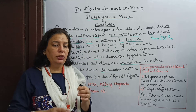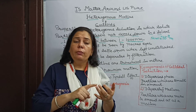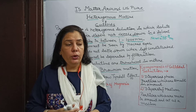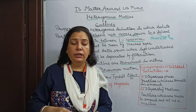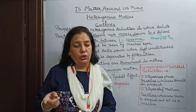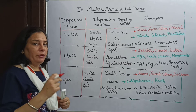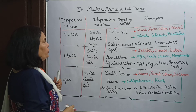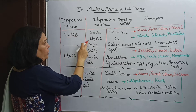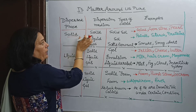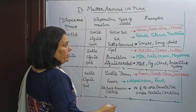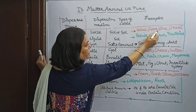Examples of colloidal solutions include fog, mist, cloud, and pumice stone. Now let us discuss the types of colloidal solutions based on the physical state of dispersed phase and dispersing medium. First, when dispersed phase is solid: solid dissolved in solid is called a solid sol — examples include colored glue, gemstone, and gem.